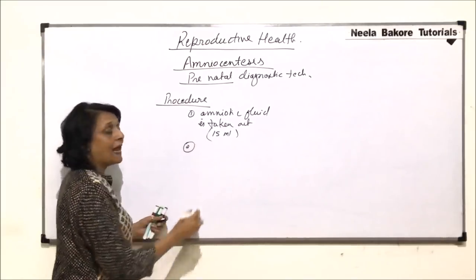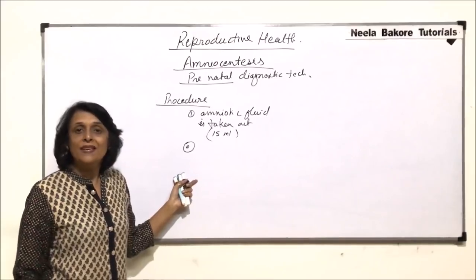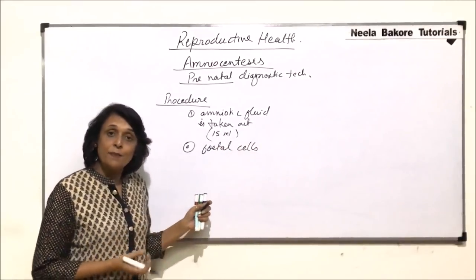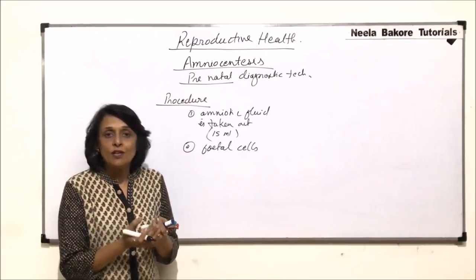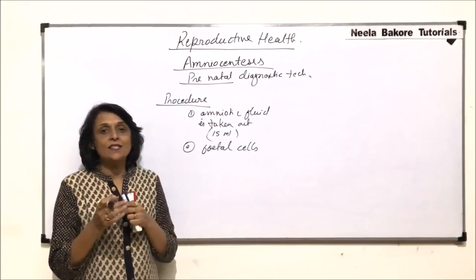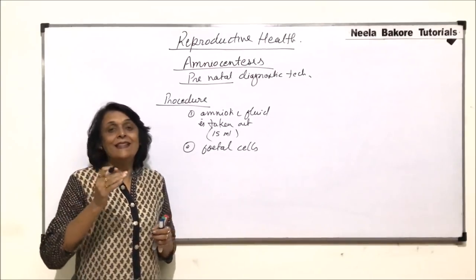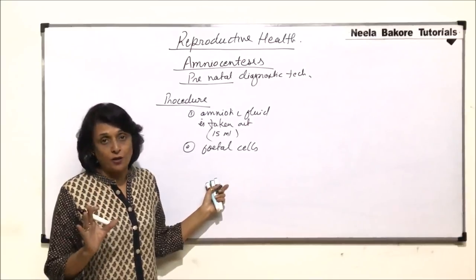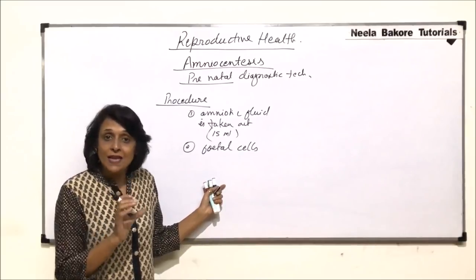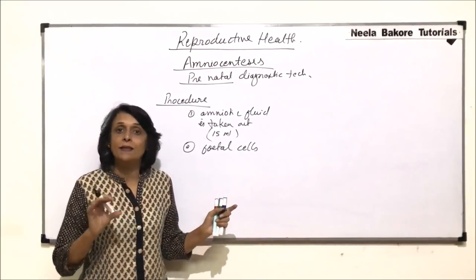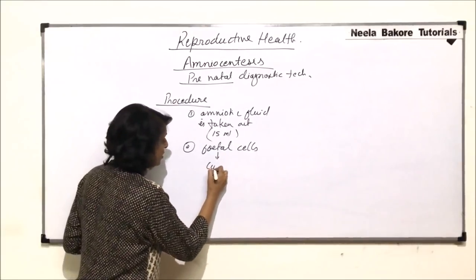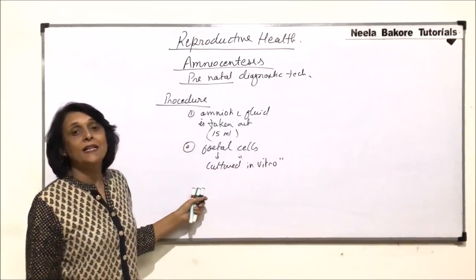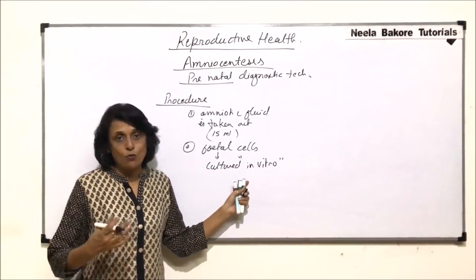In the amniotic fluid are present cells called fetal cells. As we discussed in embryonic development, when the zygote divides, certain cells form trophoblasts and some cells detach and come into the amniotic fluid. All these cells divide only by mitotic division, so whatever the genetic makeup of the zygote, the same genetic makeup is present in all other cells. These fetal cells are then cultured in vitro — outside the body but in similar conditions — where they are allowed to grow and divide.